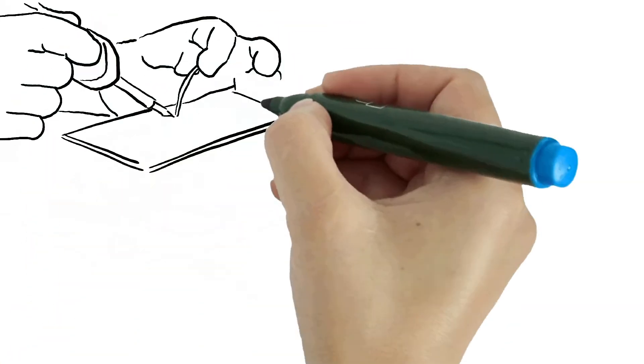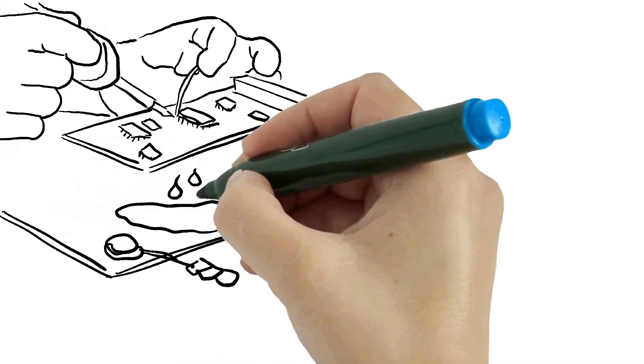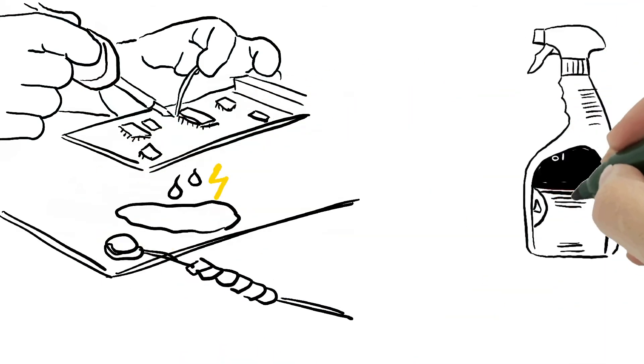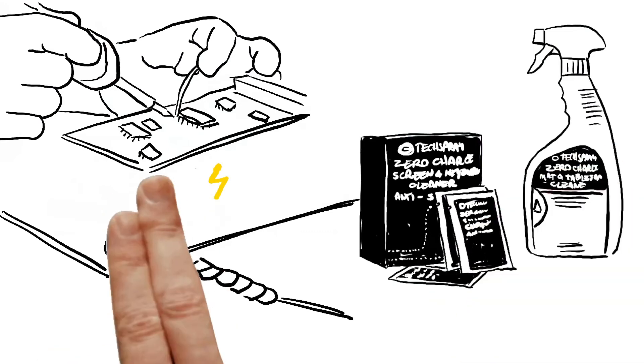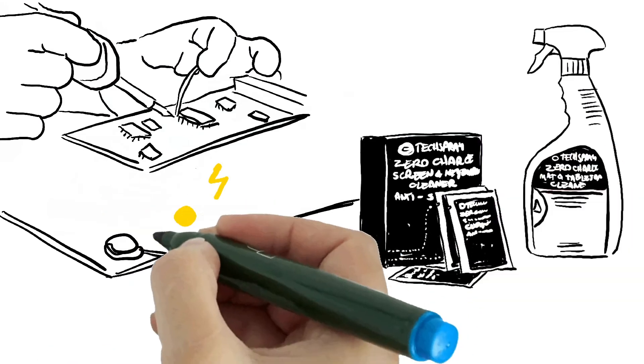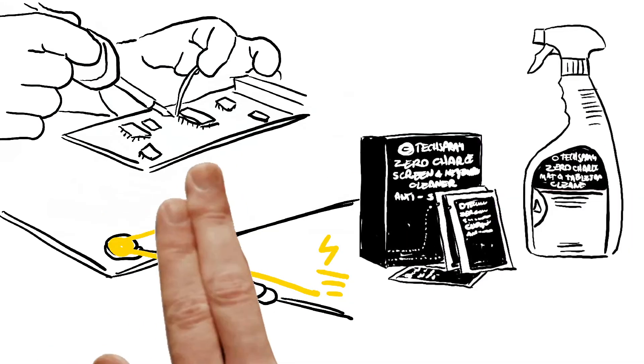Mats and other working surfaces can collect insulative fluxes, dirt, and dust. Techspray offers mat and tabletop cleaner and screen and keyboard cleaner that remove that insulative contamination and add a slight dissipative layer.